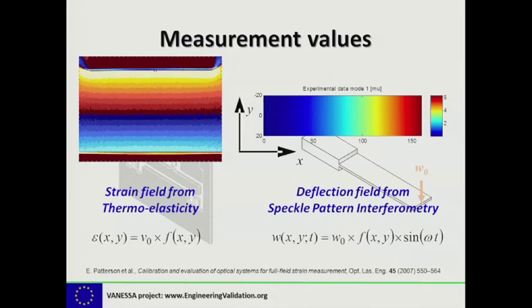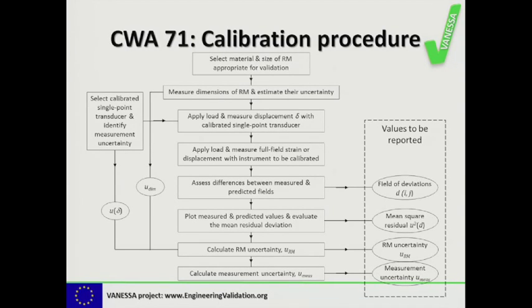This is how the measurement values would look. On the left you see a strain field from a thermo-elastic measurement; on the right you see a deflection field pattern in dynamic loading from a speckle pattern interferometer. The strain and displacement values are quite simple and can be described by a simple function f(x,y) given analytically. Comparing these measured values to the reference values sets the reference material in relation to your measurements and gives you the calibration of your instrument. This flowchart is described in the CWA — the CEN Workshop Agreement 71 — which was part of the Vanessa project.